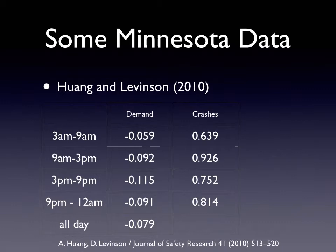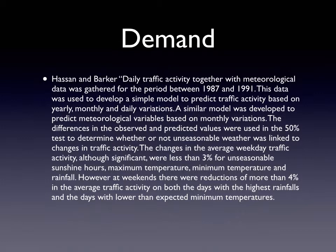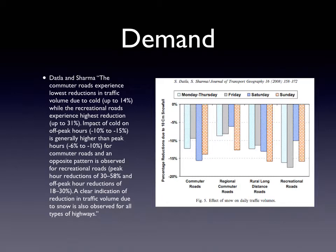Others have found other effects associated with weather, but there really isn't a lot of data on this. A study looking at Dotland Sharma found commuter roads experienced the lowest reduction in traffic volume due to cold, 14%. Recreational routes, routes that are a long distance to the cabin and things like that experience a greater reduction. And this is mostly associated with temperature rather than the precipitation, but there was also reductions associated with precipitation.